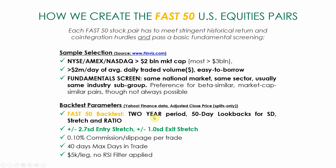The backtest parameters: it's a two-year period of backtest, 50-day look-backs for all of standard deviation, stretch, and ratio look-backs. We enter at a plus or minus 2.7 entry stretch, exit at a plus or minus 1 exit stretch. We put in 10 basis points of commission and slippage per trade, 40 days max days in trade. All the numbers you see in here are based on $5,000 a leg, and we don't apply an RSI filter on the entries.